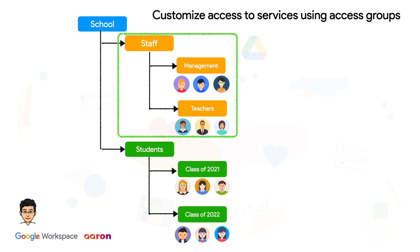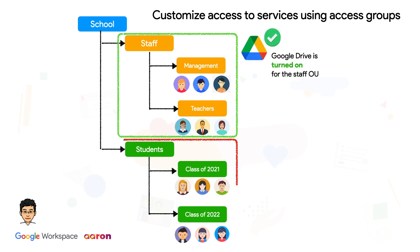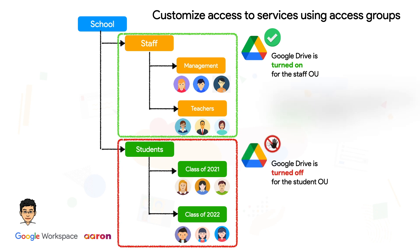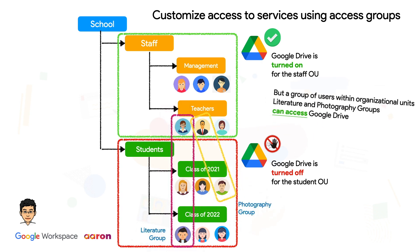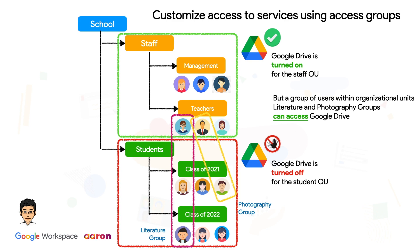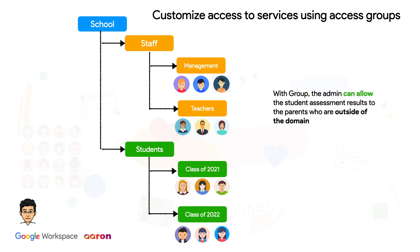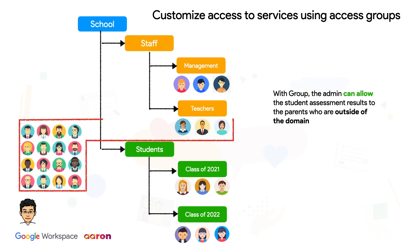In this example, Google Drive is turned on for the staff OU, while it is turned off for the student OU. Students from the Literature Group and Photography Group require access to Google Drive, so the admin can easily turn on access for these groups. Groups can also include users from outside the domain, meaning a group can include any users in your account. For example, you can let parents who are outside of the school domain see Drive files, such as student assignment results.